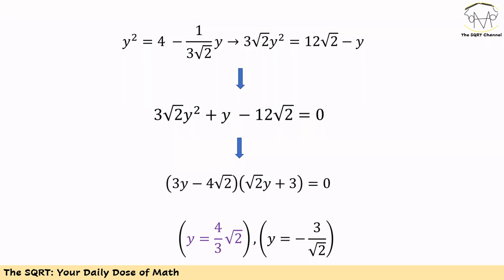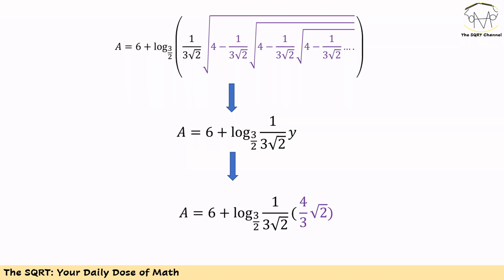If we do so, we will have two values for this quadratic equation. The first value is 4 times square root of 2 over 3, and the second value is minus 3 over square root of 2. Since we defined Y to be the result of a radical, Y should be a positive number. Accordingly, the second number is not valid, and we can say Y equals 4 times square root of 2 over 3.